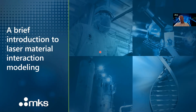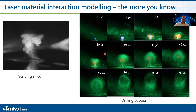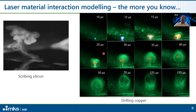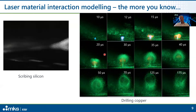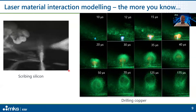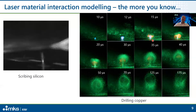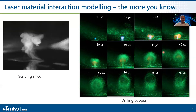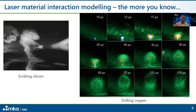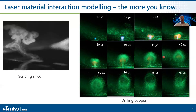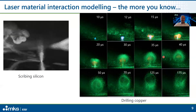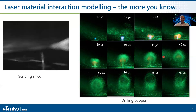Now let's look at laser material interaction modeling. You might ask: why bother? You can visualize many of these processes today with high-speed cameras, schlieren imaging, or pump-probe measurements. Here we have an example of scribing silicon, and on the right a series of images for drilling through the top copper layer of a printed circuit board. While these provide some insights, we found that calculating the interaction from first principles gives another window into the laser processing world and can be surprisingly helpful.